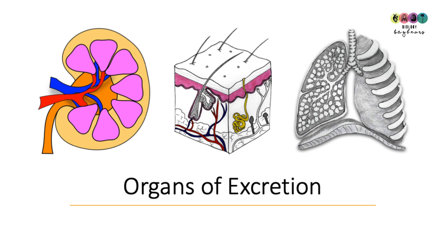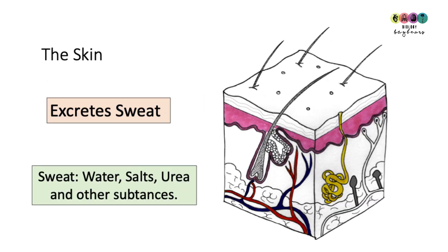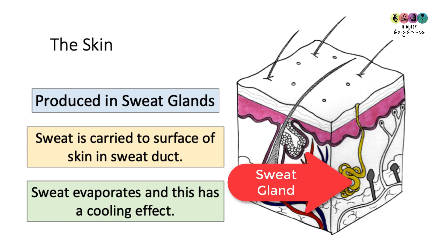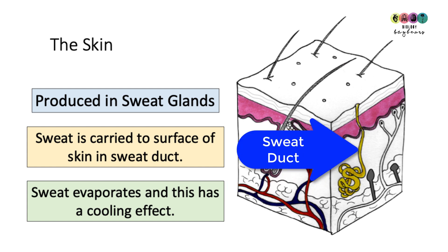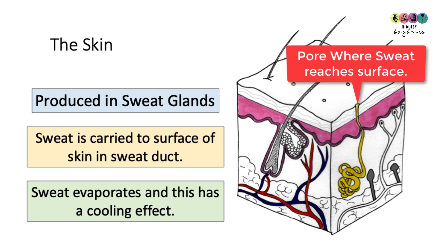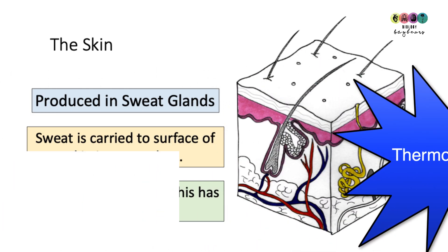The organs of excretion are the kidneys, the skin, and the lungs. The skin excretes sweat, which is mostly water and salts but also contains urea and other substances. Sweat is produced in a sweat gland and travels to the surface of the skin in a sweat duct. You need to be able to indicate on a diagram where sweat emerges from the sweat duct — at a pore. Remember that when sweat evaporates this has a cooling effect, assisting in thermoregulation.